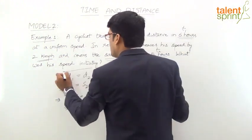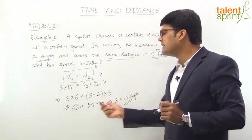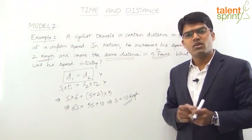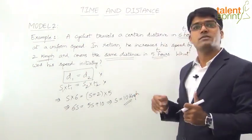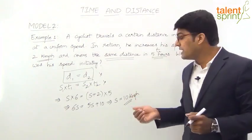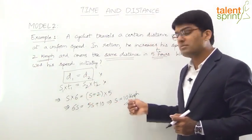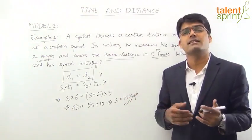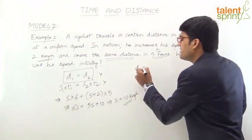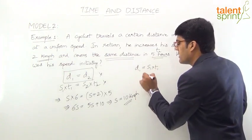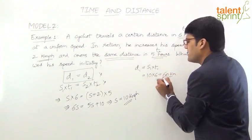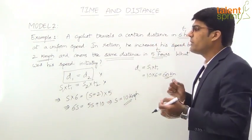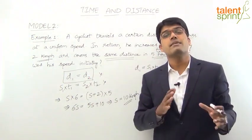You can solve these questions. The important point is that D1 equals D2 — the distance traveled is the same in both cases. The question can be asked in many formats. What was the speed initially? 10 km/hr. What was the new speed? New speed S2 = S + 2 = 10 + 2 = 12 km/hr. What is the distance? D1 = S1 × T1 = 10 × 6 = 60 km. And D2 = 12 × 5 = 60 km. So D1 equals D2.